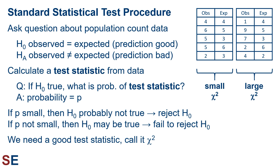So we need a good test statistic — call it chi-squared. Let's look at the examples to the right. The first set of values shows close agreement, so we would want our chi-squared test statistic to return a small result. The second set of values shows little agreement, so we would want our chi-squared test statistic to return a large result.